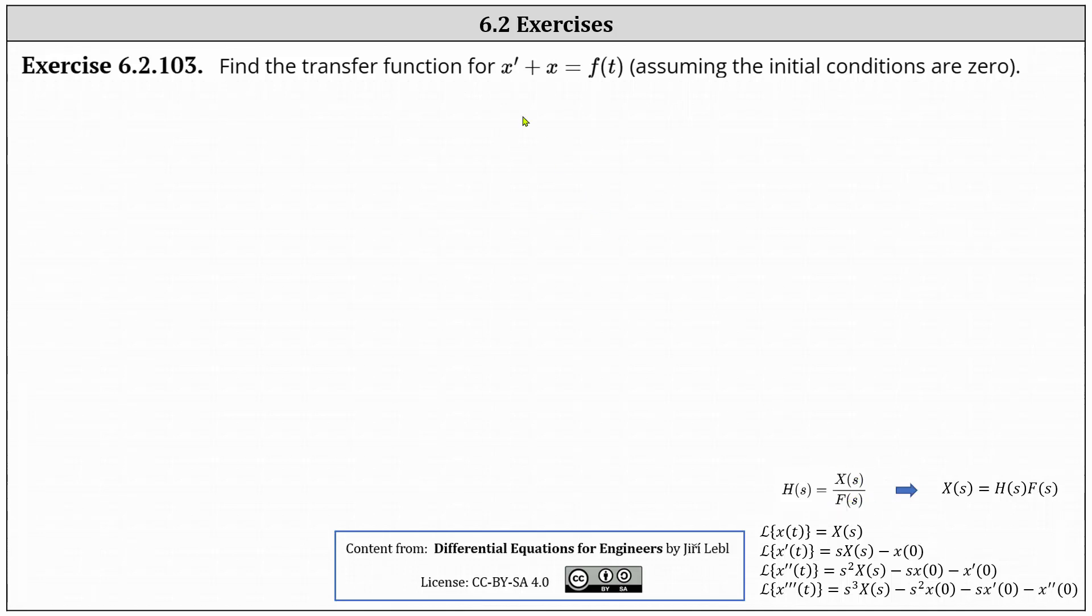The first step is to take the Laplace transform on both sides of the equation. On the left, the Laplace transform of x prime is equal to s times big X of s minus x of zero,